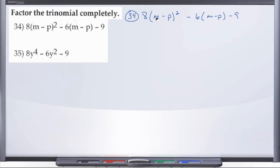And what you're going to do is choose some letter, usually we use u, but you can really choose anything you want, to represent this quantity. And so in this case, we're going to say u equals m minus p. So let's go ahead and rewrite our trinomial, except anywhere we see this m minus p quantity, we're going to instead substitute a u in.